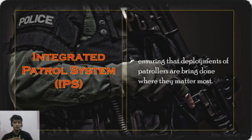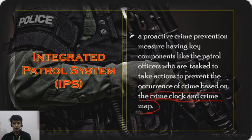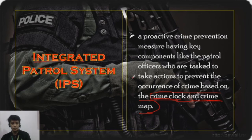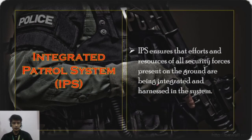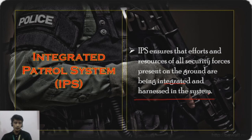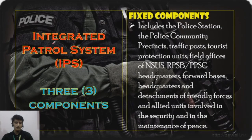IPS ensures that deployment of patrollers is done where they matter most. Based on the crime clock — which identifies peak hours for crime — and crime map — which identifies locations with high crime — patrol resources are deployed where most needed. By the word 'integrated,' it involves several groups or units. IPS also ensures that efforts and resources of all security forces on the ground are integrated and harnessed in the system.